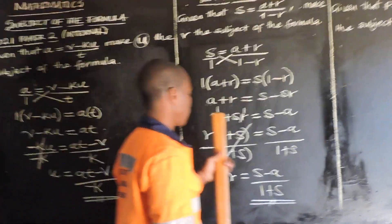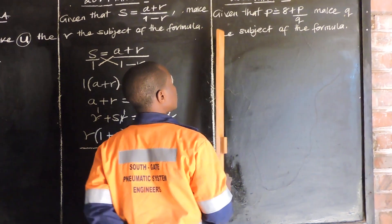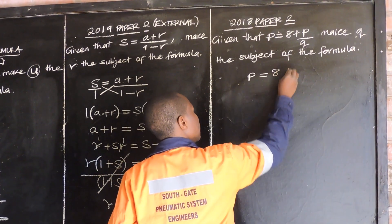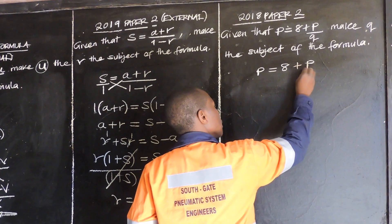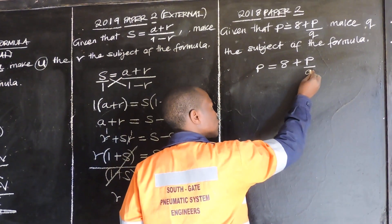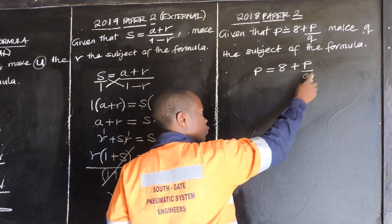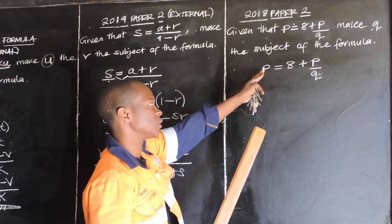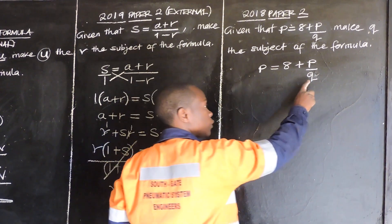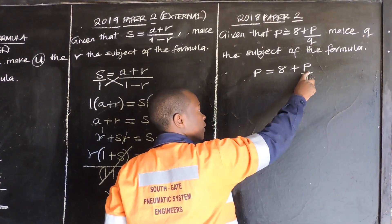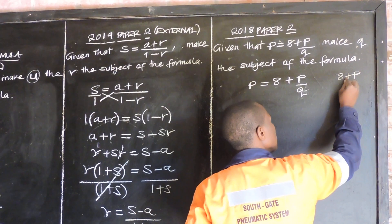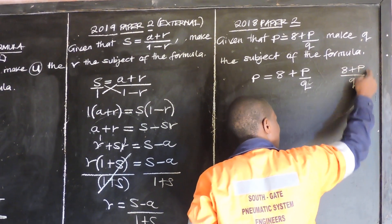Let us look at 2018 paper 2. Given that P is equal to 8 plus P over Q. Make Q the subject of the formula. They want us to change the subject from P to Q. Be very careful: this Q is only affecting P — it is P over Q, not affecting the 8. So 8 is 8 over 1, and then P over Q separately.